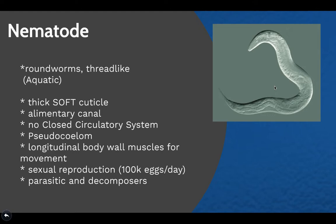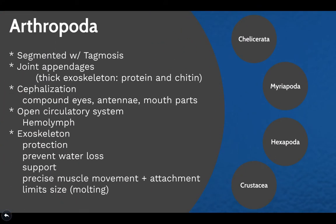Nematodes are roundworms — thread-like organisms living in aquatic environments. They have a thick but soft cuticle, an alimentary canal, and no closed circulatory system. They have a pseudocoelom rather than a true coelom, and their body wall muscles are longitudinal, allowing movement. These organisms are highly reproductively active, capable of laying about 100,000 eggs per day. Nematodes can be parasitic or serve as decomposers in their environmental niches.